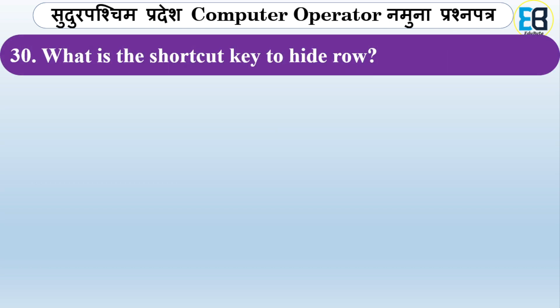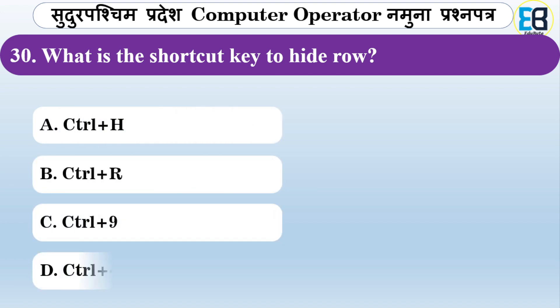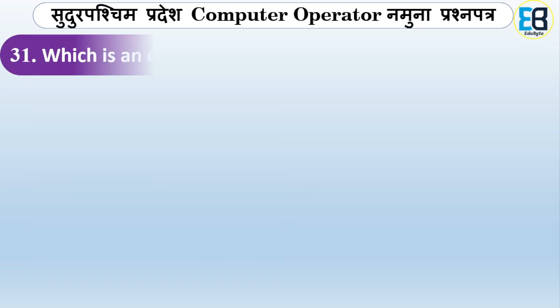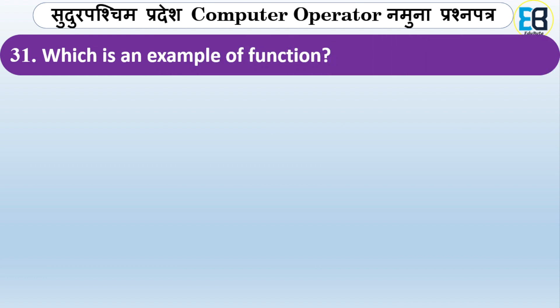What is the shortcut key to hide a row? Options are Ctrl+I, Ctrl+R, Ctrl+Line, or Ctrl+Minus. The correct answer is Ctrl+Minus — that is the shortcut key used to hide a row.